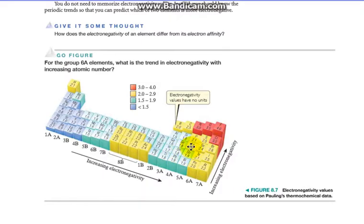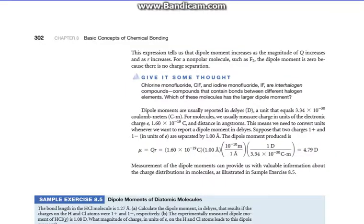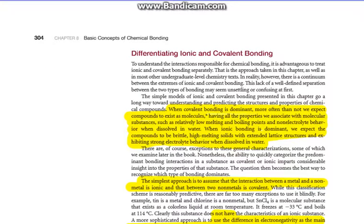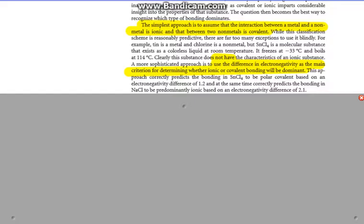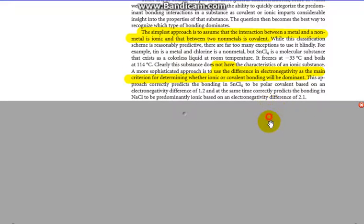Tin is over here at 1.8. You can see it's a metal on the fringe of the staircase there. So you can see it's relatively closer, 1.2, compared to metals over here which would have a huge electronegativity difference. So it's primarily covalent because of that small electronegativity difference.